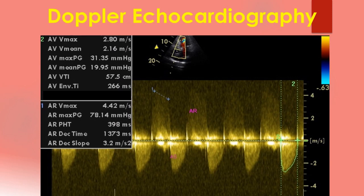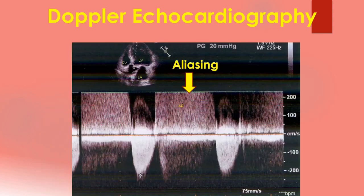Doppler echocardiography uses the Doppler principle and targets the moving red blood cells. The velocity at each point is depicted as a spectral tracing. In pulsed Doppler, intermittent pulses are sent and echoes received. In continuous wave Doppler, the signals are sent and received continuously. Flow away from the transducer is depicted below the baseline and those towards the transducer are depicted above the baseline. When the velocity is beyond the limit of the Doppler mode used, the upper part is cut off, as can be seen above the baseline. The remaining part is shown below the baseline. This is known as aliasing and wraparound, and the direction of flow is difficult to interpret then.